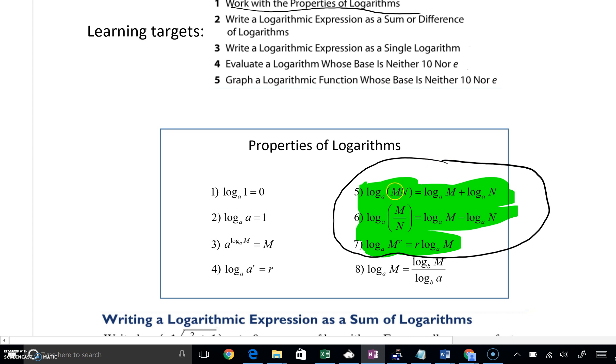If we had log base A of M times N, and there's multiplication in here, we can make this log base A of M plus log base A of N. So we see multiplication in here, we can write two logs on the right side as addition, separating the M and the N.